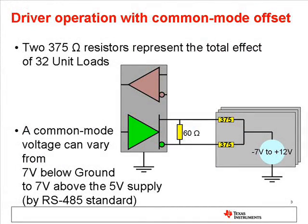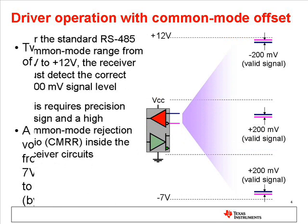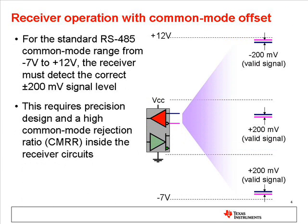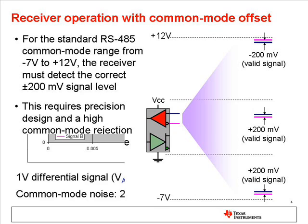For the driver, this means generating a 1.5 volt signal between A and B when the network presents a load which has an offset voltage. For the receiver, the challenge is to detect the difference between the A and B voltage levels when both lines are offset from the local supply rails.